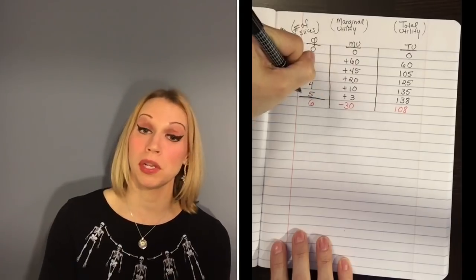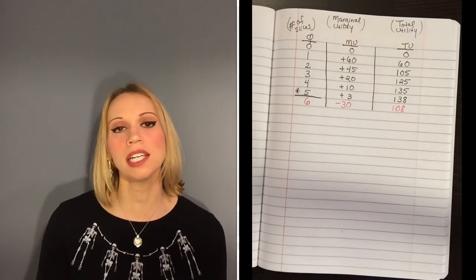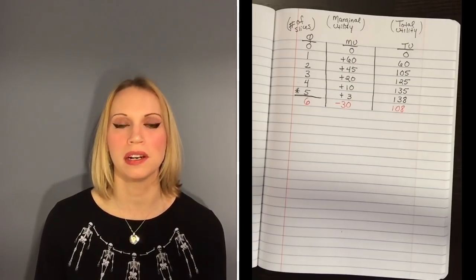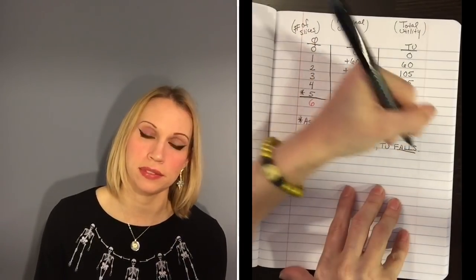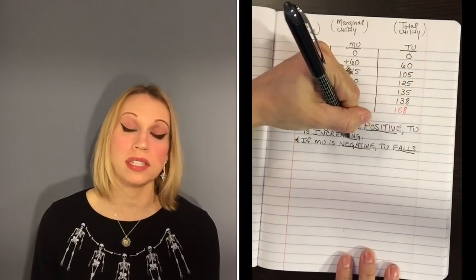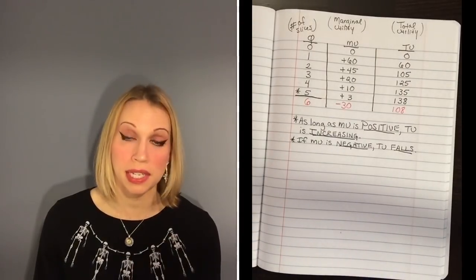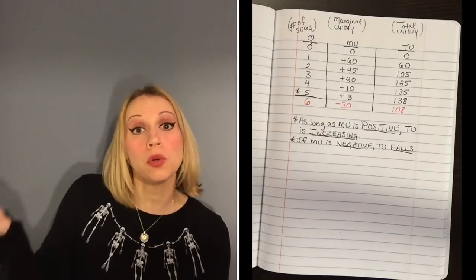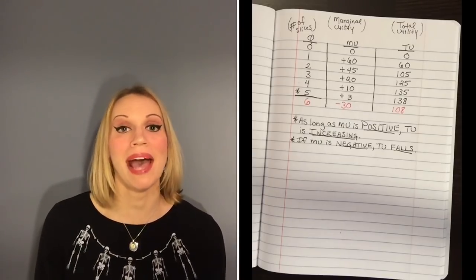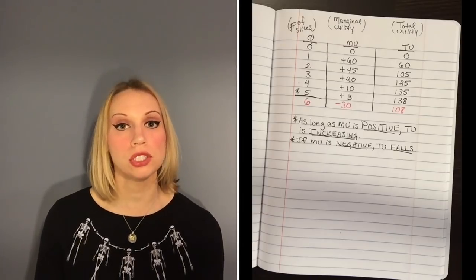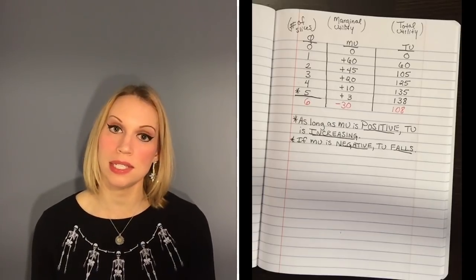So in this example, you would want to go up to five slices of pizza. Now take a look at the chart. I want to point out some important relationships happening here. First, notice that as long as marginal utility is positive, total utility is increasing. It really doesn't matter that marginal utility is going down from 60 to 45 to 20 to 10 — as long as you are adding a positive number to your total, your total is still going up. But whenever you add a negative number, that makes your total utility fall. So when marginal utility is negative, your total utility decreases.